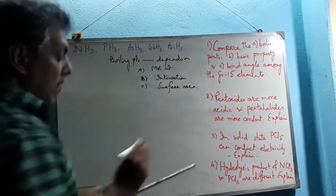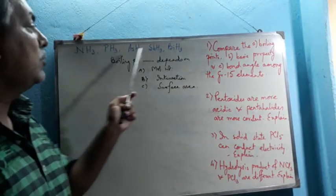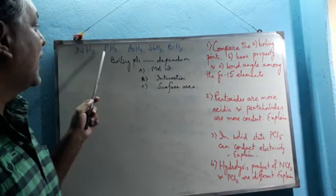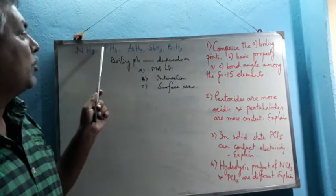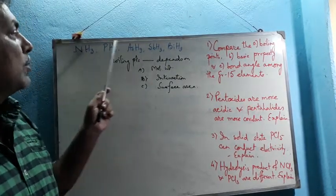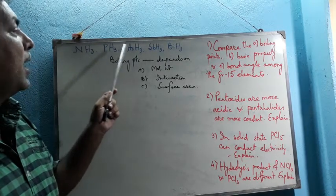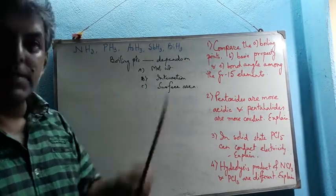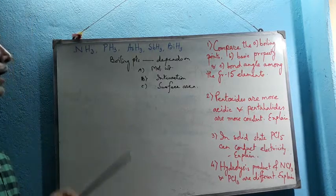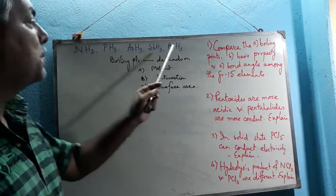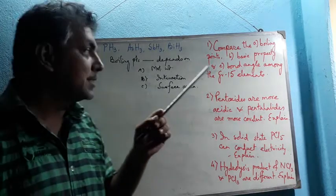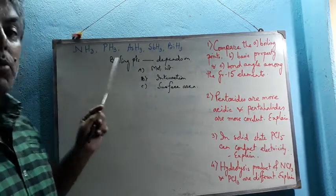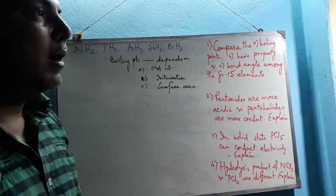Among these three factors, the first factor is predominant from phosphine to bismuthine. As we go down the group, the atomic mass increases from phosphorus to bismuth, so the molar mass of phosphine, arsine, stibine, and bismuthine increases from left to right. Therefore, boiling point increases from phosphine to bismuthine with increasing molecular weight.